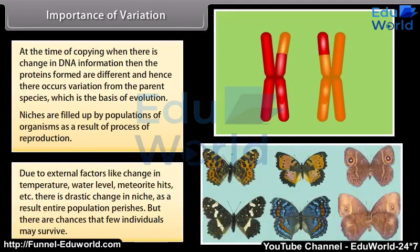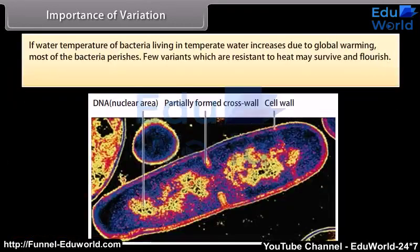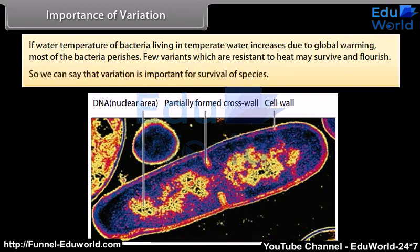Due to external factors like change in temperature, water level, meteorite hits, etc., there is a drastic change in a niche. As a result, an entire population may perish, but there are chances that a few individuals may survive. For example, if the water temperature of bacteria living in temperate water increases due to global warming, most bacteria perish, but few variants resistant to heat may survive and flourish. So variation is important for the survival of species.